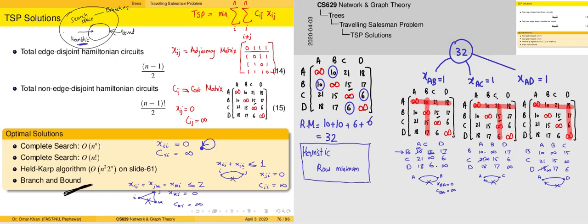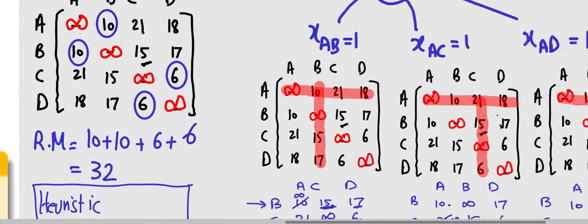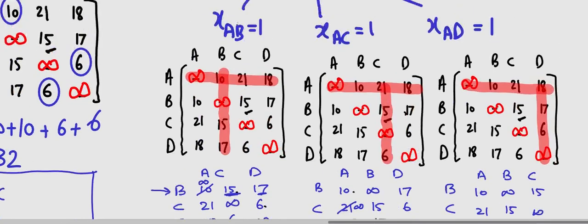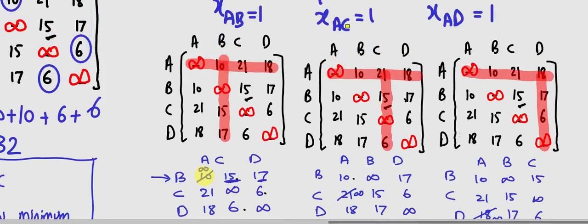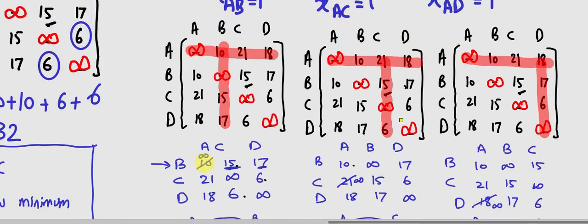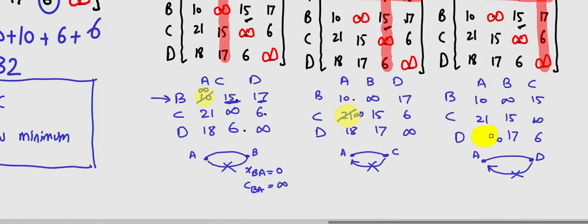After removing row A and column C, we are left with rows B, C, D and columns A, B, D. Since we moved from A to B, we don't want to move back from B to A, so we set that movement to infinity. Similarly for A to C, we don't want C to A or D to A — those movements are set to infinity to eliminate sub-tours.